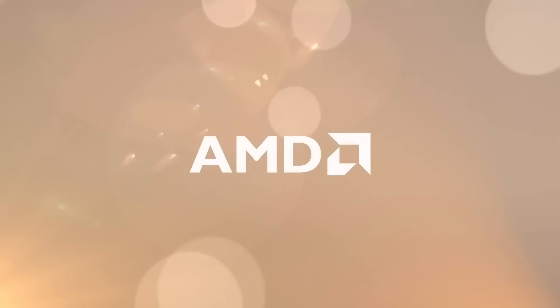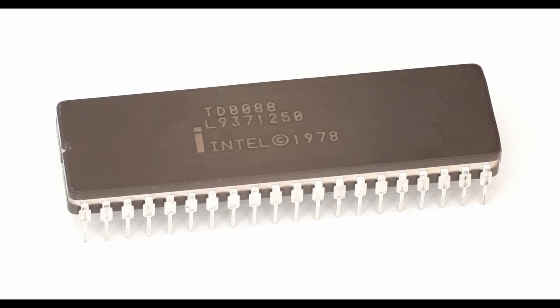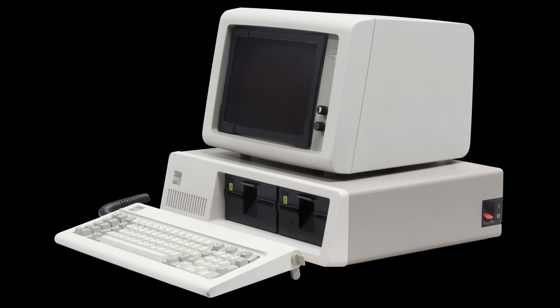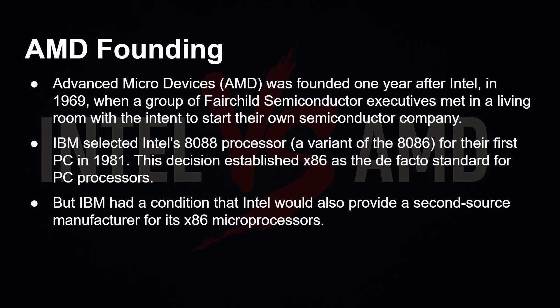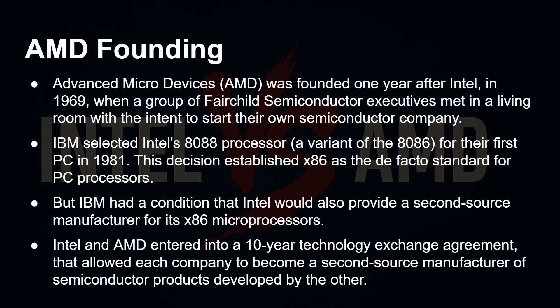AMD, funnily enough, was founded just one year after Intel, in 1969 — again, a group of executives from Fairchild Semiconductor who met in someone's living room with the intent of starting their own company. When Intel was selected by IBM for its 8088 processor — a variant of the 8086 — for the first PC, this established x86 as the de facto standard for PC processors. But IBM had a condition: Intel would also provide a second-source manufacturer, so Intel and AMD entered a 10-year technology exchange agreement allowing each company to manufacture the other's semiconductor products.